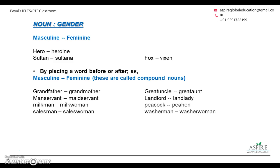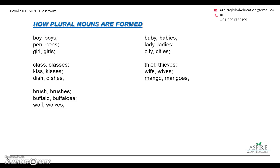Now let's try to create the feminine form for compound nouns — words made by combining two words. For example: grandfather and grandmother, great uncle and great aunt, milkman and milkwoman, washerman and washerwoman. You can go through these words and practice.